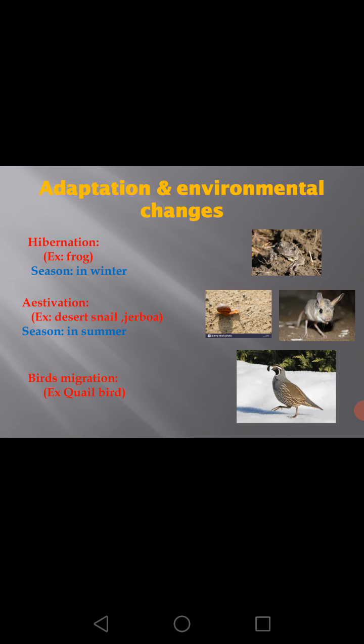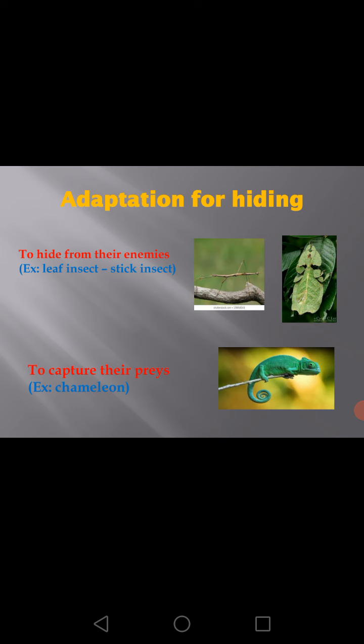The third one is bird migration. As in the quail bird, it migrates from cold and polar regions to warmer regions for reproduction. Now let's come to the last point in this lesson, which is adaptation for hiding. Some animals and insects have the ability to simulate the dominant environmental conditions.